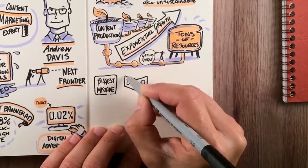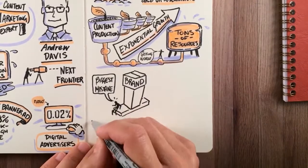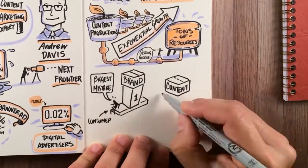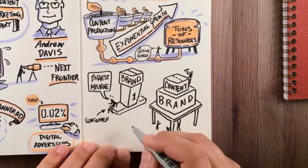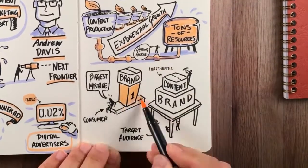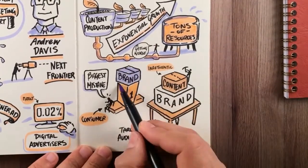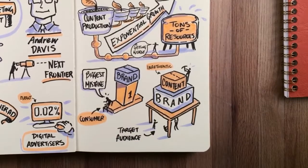Perhaps the biggest mistake content marketers make is that they put the brand first and the consumer second, so when they produce their own content, it revolves around the brand itself instead of its target audience. The result is inauthentic content against which today's consumer is completely immune.